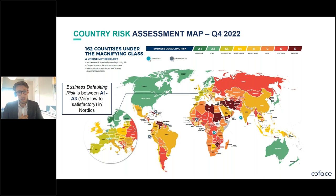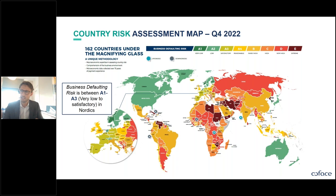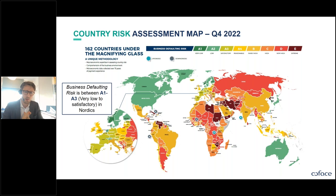In Cofas's Economic Research Department, we produce updates on business defaulting risk in roughly 160 countries across the world, three or four times a year. This is business defaulting risk — not sovereign risk as you might see from Moody's or Fitch — because as a credit insurer, what we care about is non-payment risk. In our latest update from February, we didn't see many changes, especially in Europe and Northern America, after quite a few downgrades last year following the invasion of Ukraine. The next update will be next month.